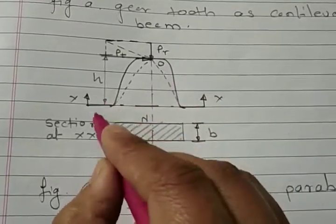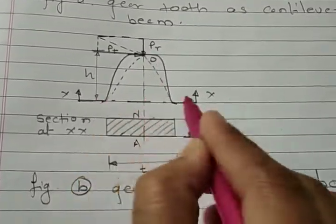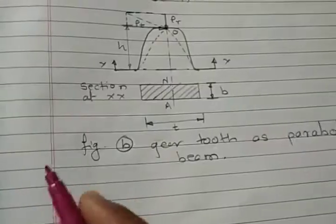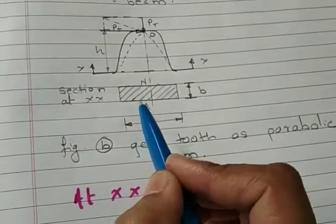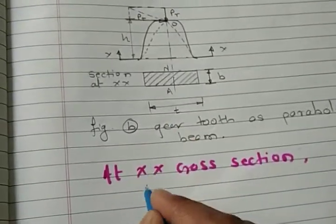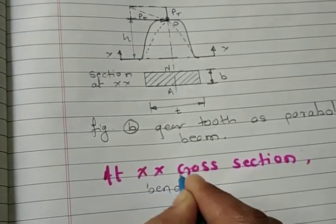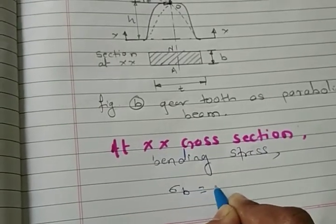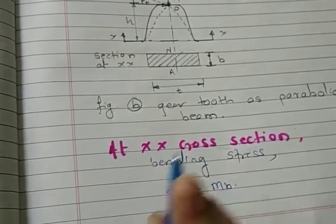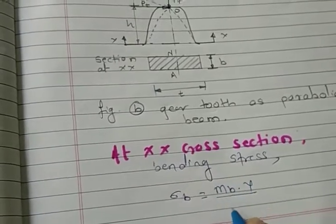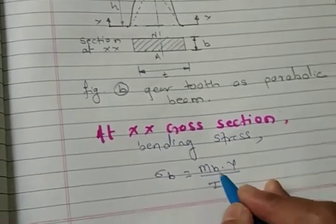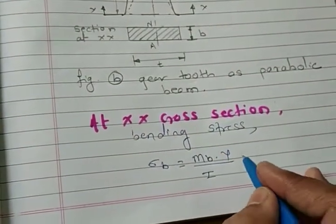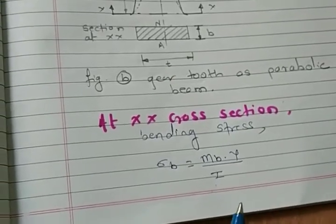We know that the weakest section of the gear is at this xx cross section where the parabola is tangent to the tooth profile. So at xx cross section bending stress is sigma b equal to mb y divided by i where mb is maximum bending moment, y is centroidal distance and i is mass moment of inertia.